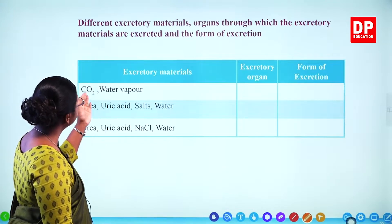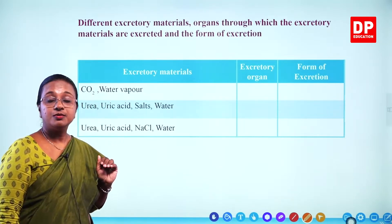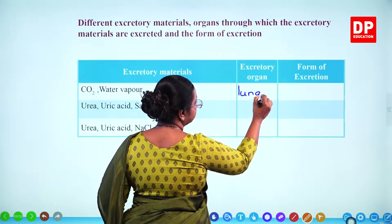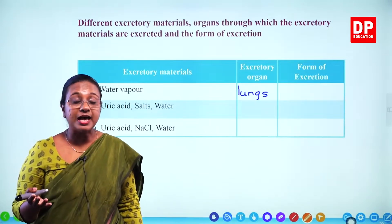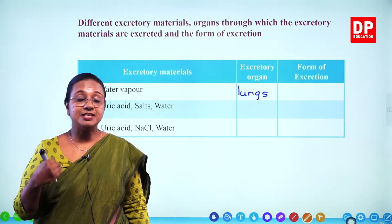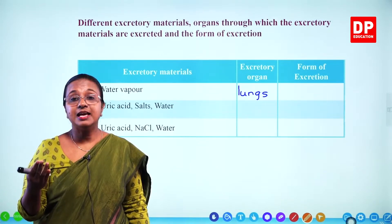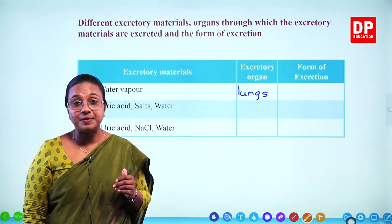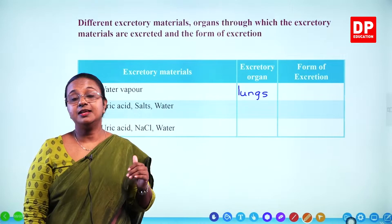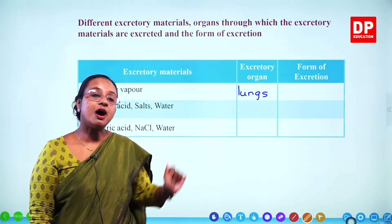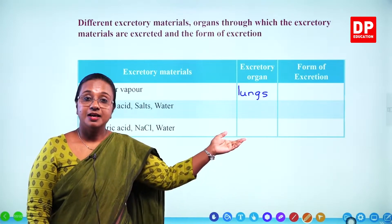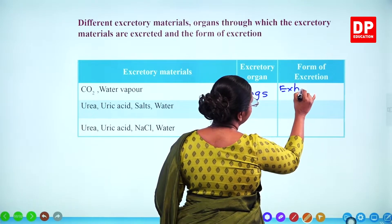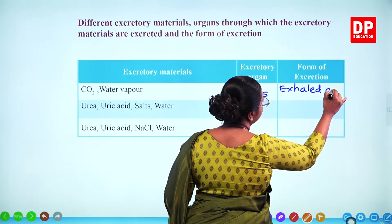For example, carbon dioxide and water vapour are excreted through the lungs. When we inhale we take in oxygen, and when we exhale, the exhaled air contains carbon dioxide and water vapour. So carbon dioxide and water vapour are excreted in the form of exhaled air.